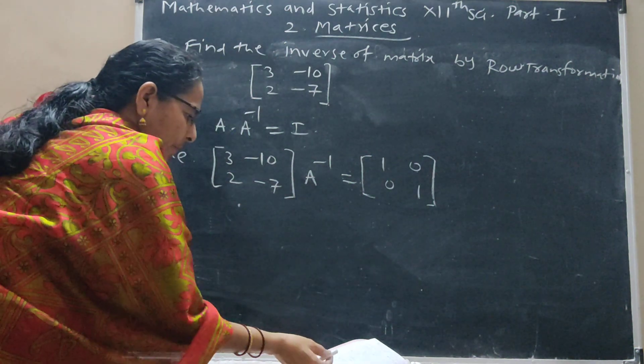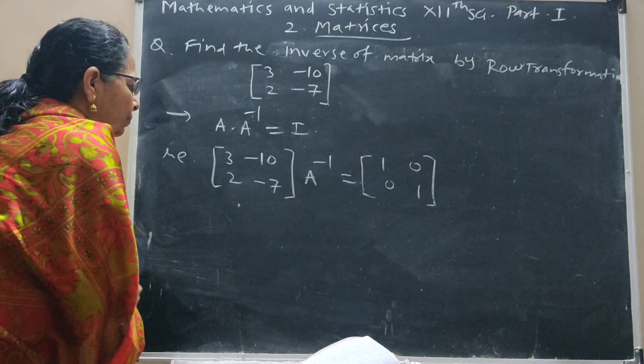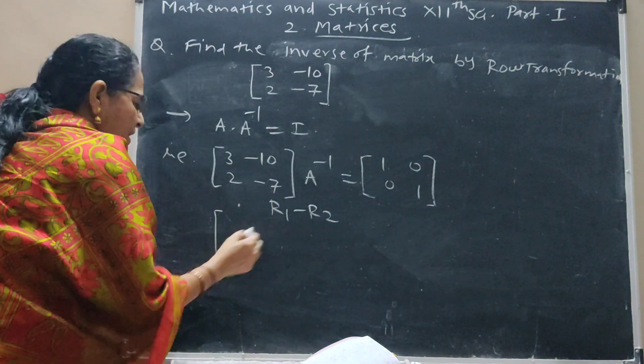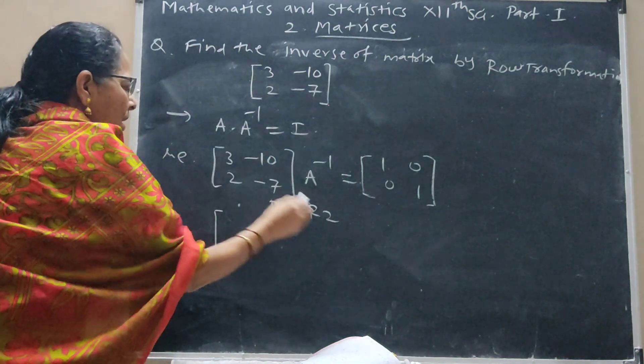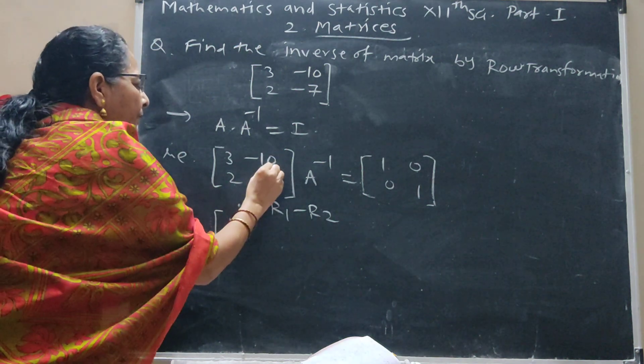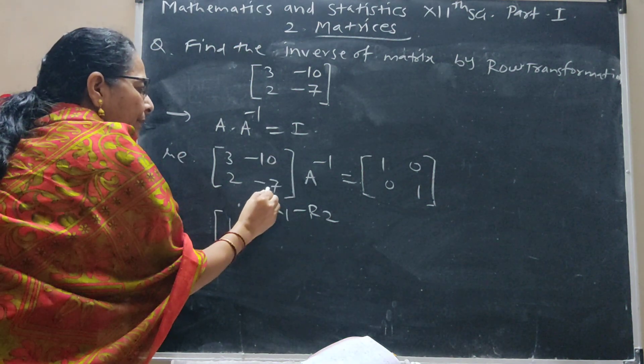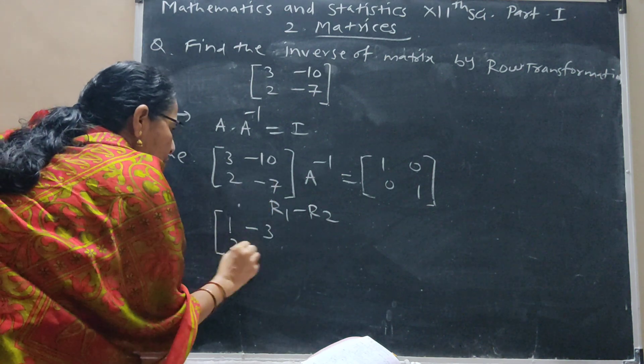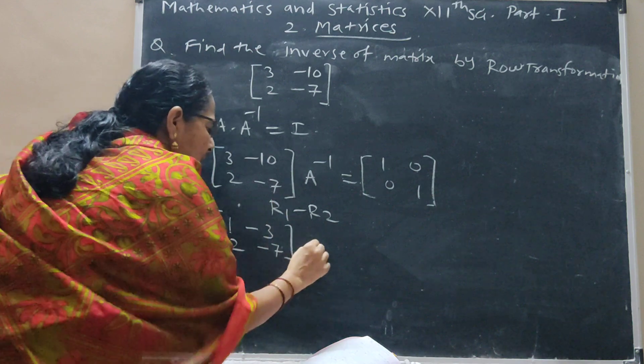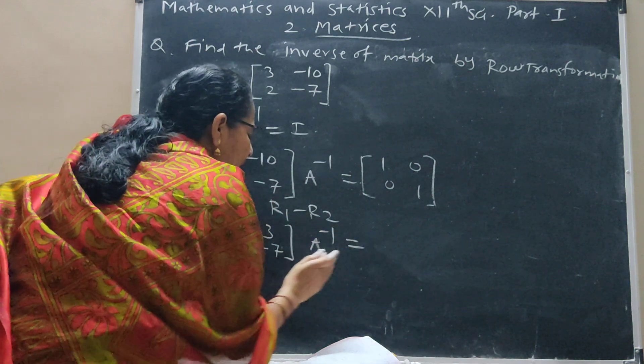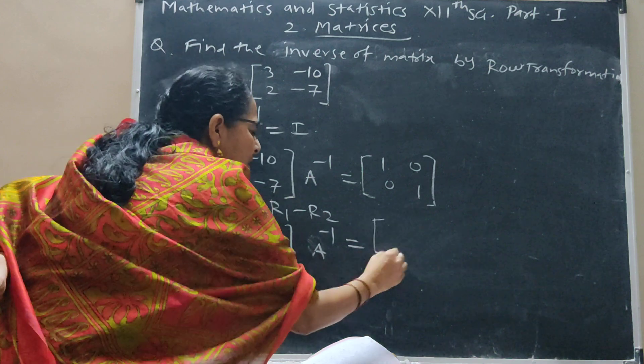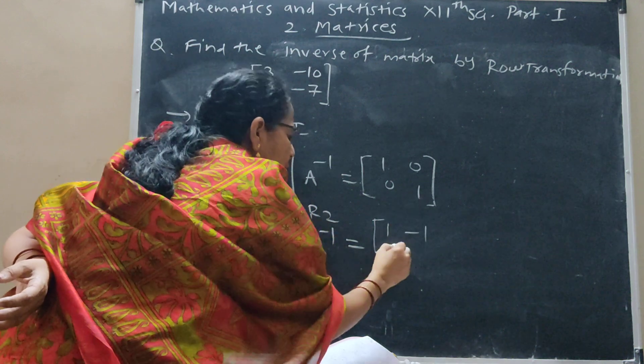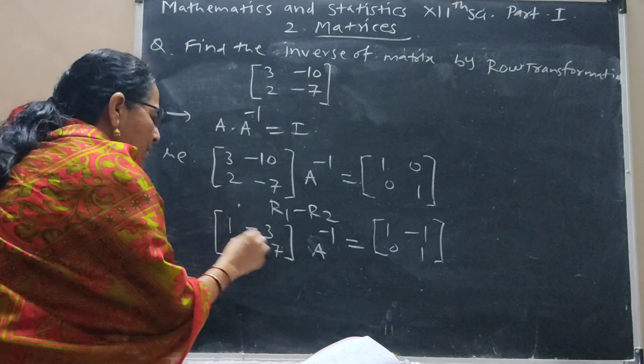R1 minus R2. Change is at R1, so R1 minus R2: 3 minus 2 is 1. Now minus 10 minus minus 7, that means plus 7, that is minus 3. Here is 2, here is minus 7. What are the changes at LHS, we have to make changes at RHS. R1 minus R2: 1 minus 0 is 1, 0 minus 1 is minus 1.